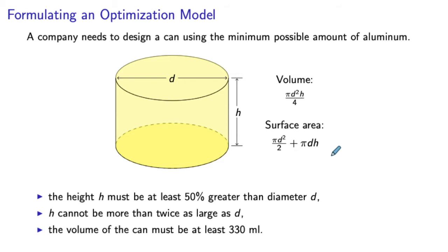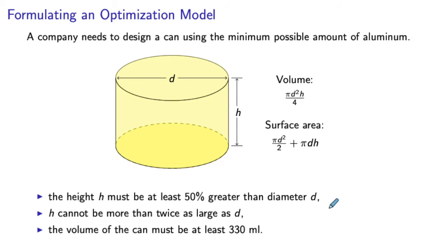In this example, it is straightforward to distinguish controllable from uncontrollable. The design consists of deciding the values for h and d, so h and d are natural decision variables. The description of the design itself is something we were given and cannot change — we use this information in the model as what we call the model's parameters.